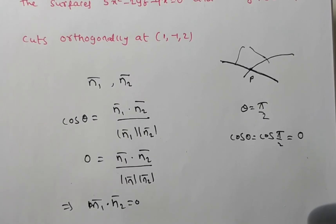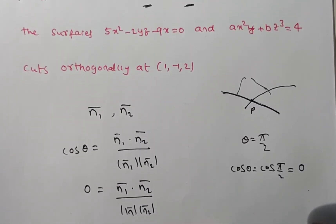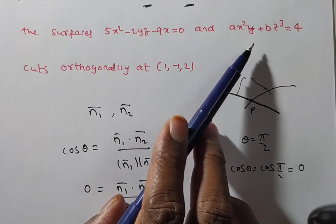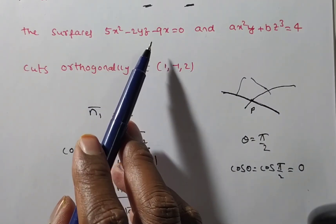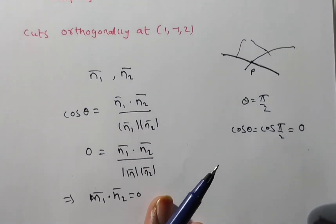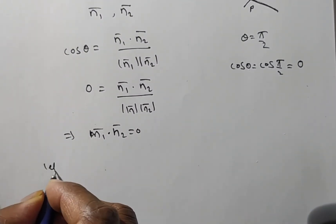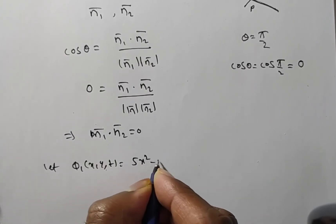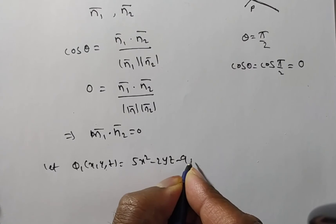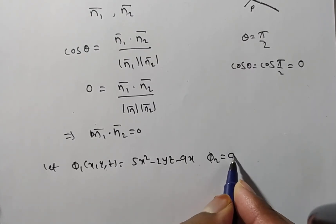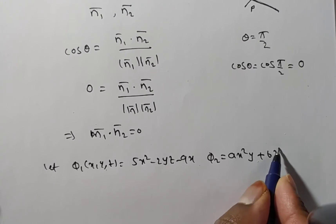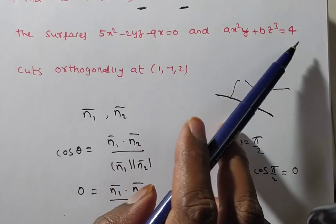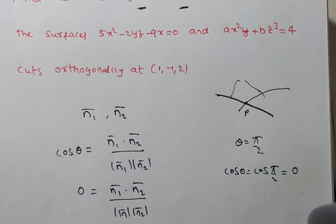We need to find N1 and N2, the normals to each surface. Let π1(x, y, z) = 5x² - 2yz - 9x, and π2(x, y, z) = ax²y + bz³ - 4. This is π1 and this is π2, where we bring the 4 to the left side.